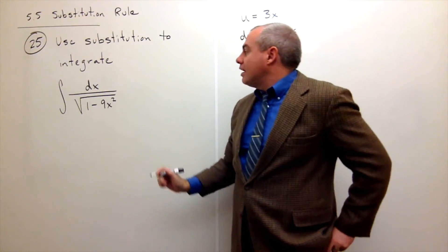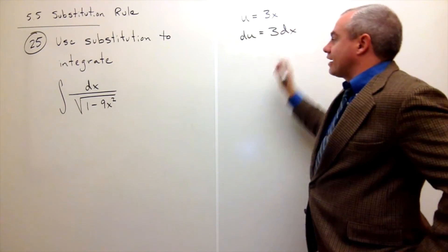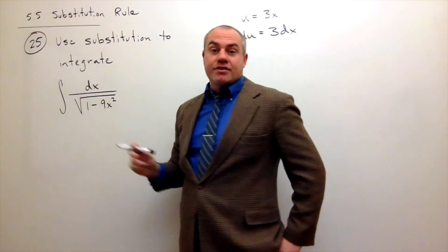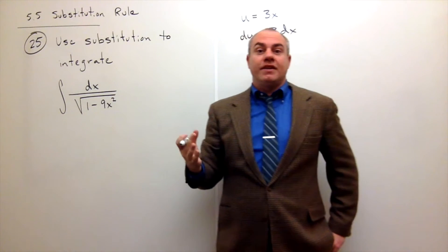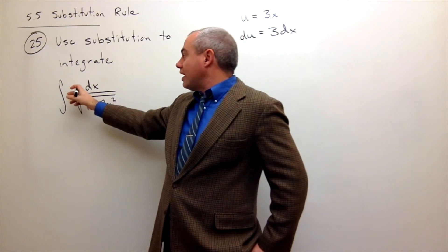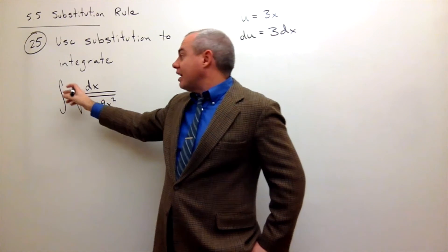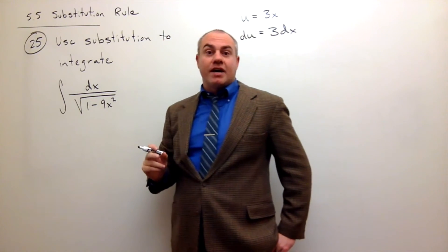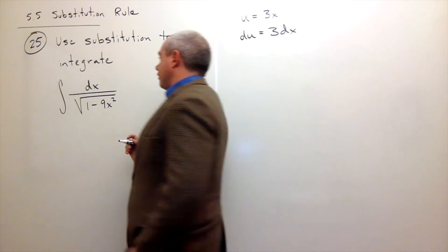Let's look at this. I don't have a 3 dx, I just have a dx on top, but I can easily fix that problem. The way I'm going to fix it is I'm going to put a 3 in up on top, but then I'm also going to multiply on the outside by one-third.